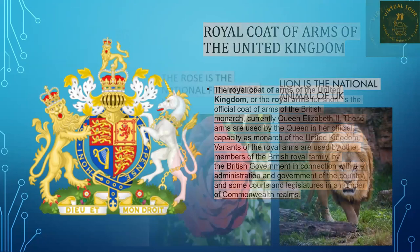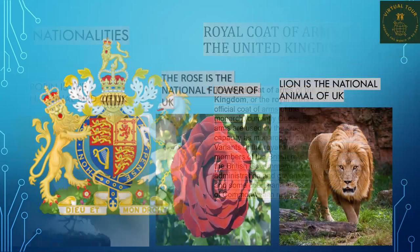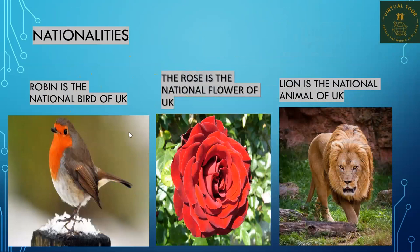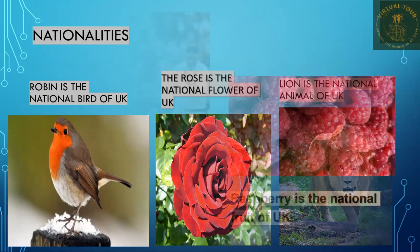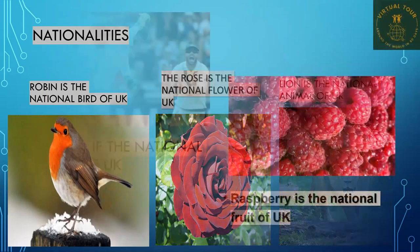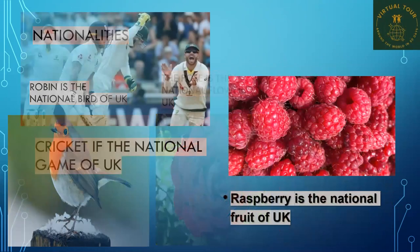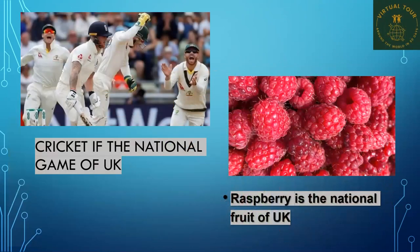The national symbols of the United Kingdom: Robin is the national bird, the rose is the national flower, and the lion is the national animal. The national sport is cricket, and the national fruit is raspberry.